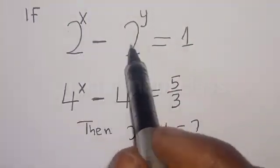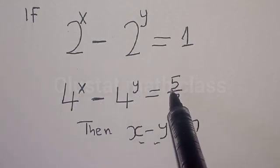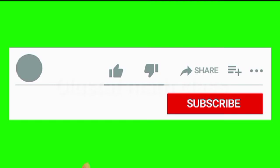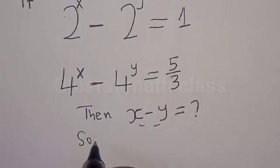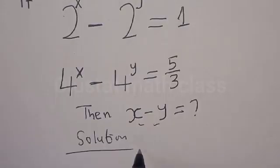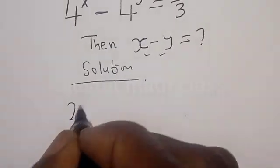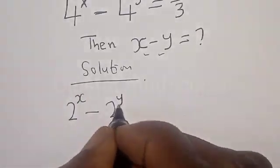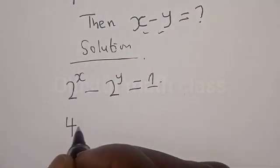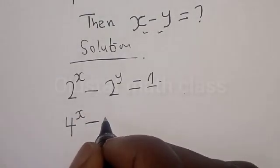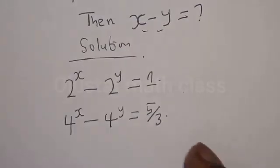We have 2 raised to power x minus 2 raised to power y is equal to 1, and 4 raised to power x minus 4 raised to power y is equal to 5 divided by 3. Now let's work on this. The second equation, 4 raised to power x minus 4 raised to power y equals 5 divided by 3, can be expressed as 2 squared all raised to power x minus 2 squared all raised to power y equals 5 divided by 3.